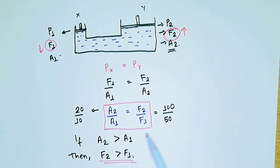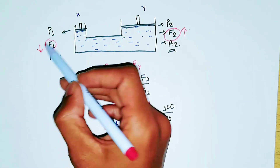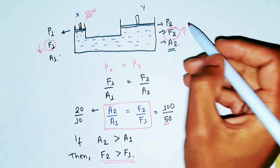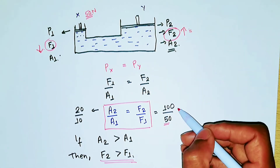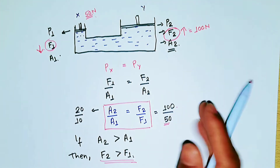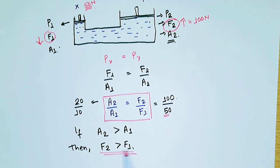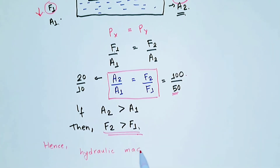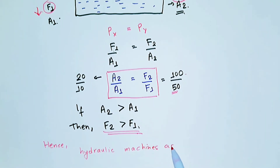So with Pascal's Law, if one area is small and one is big, the force will be less on the small side and more on the big side. When you apply 50 Newtons here, in this hydraulic machine the force will be converted to 100 Newtons — the force is multiplied by twice. Hence, hydraulic machines act as force multipliers.